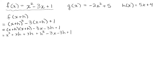The only thing left to do is combine like terms, and the only like terms here are the XH terms — that's 1XH plus another 1XH. So our final answer will be X squared plus 2XH plus H squared minus 3X minus 3H plus 1. All of that is F of X plus H.